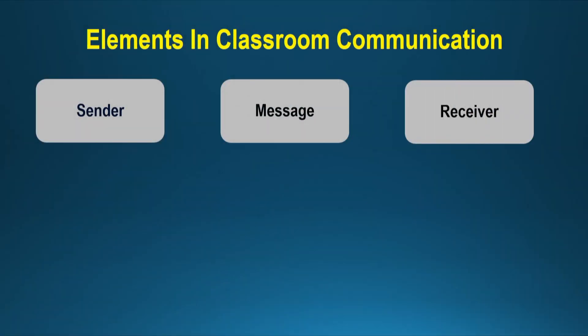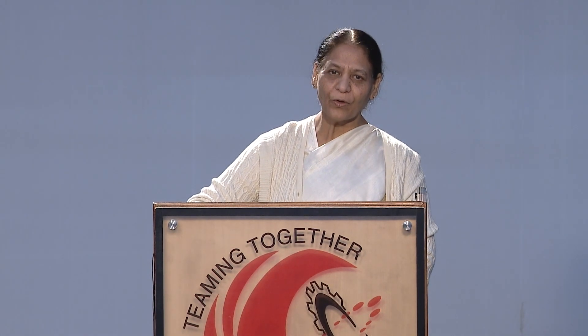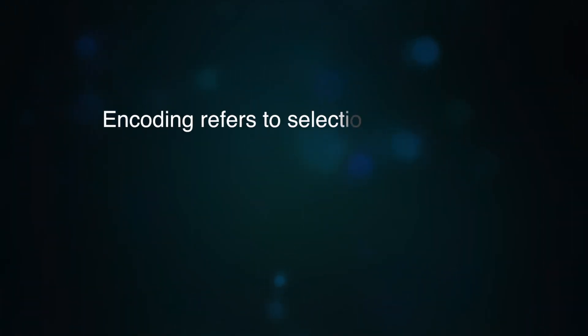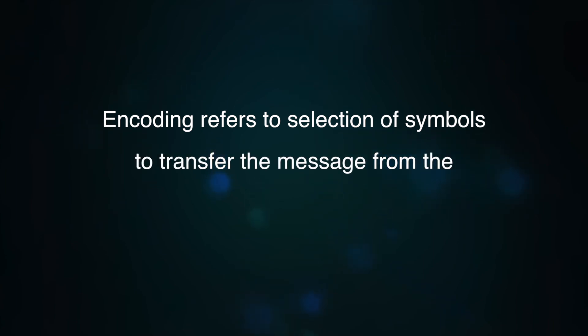There is a receiver of the message. The receiver, again, can be a teacher or a student. The sender of the message is involved in the process of encoding. Encoding refers to the selection of symbols to transfer the message from the sender to the receiver, and the sender is involved in this process of encoding.